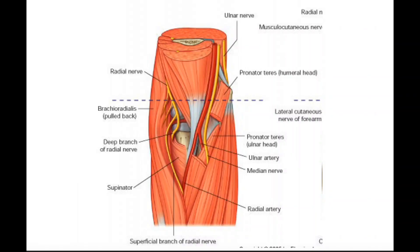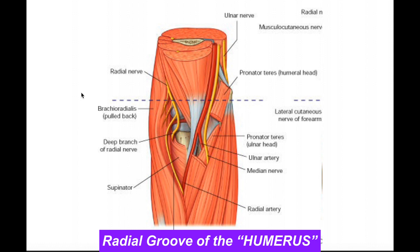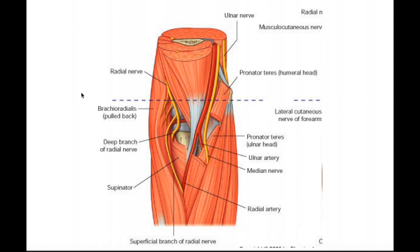Welcome back to Anatomy and Physiology on Catalyst University. In this video, we're going to continue talking about the radial nerve. We talked about how it originated from the brachial plexus — specifically from the posterior cord — and then it's going to course into the radial groove of the triceps, traveling down that radial groove and being held in place by the triceps brachii.